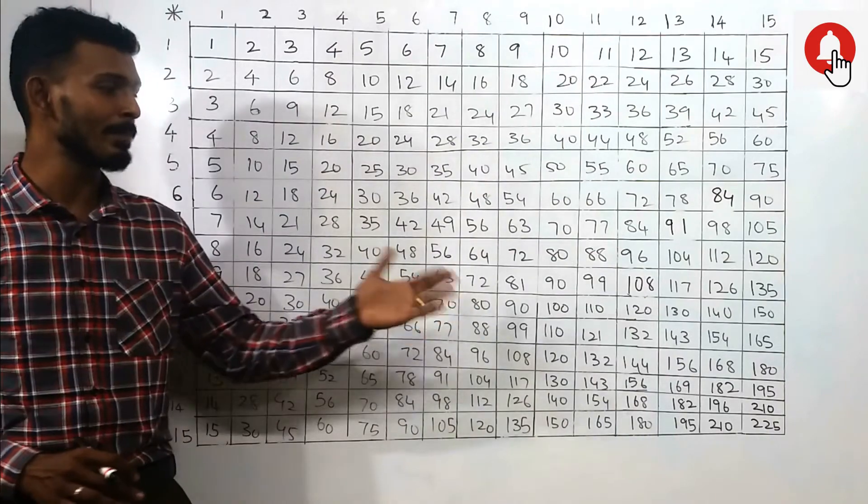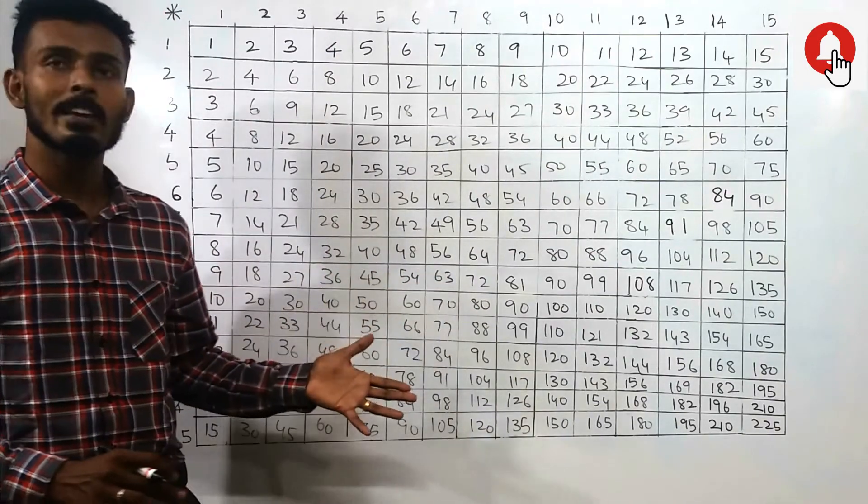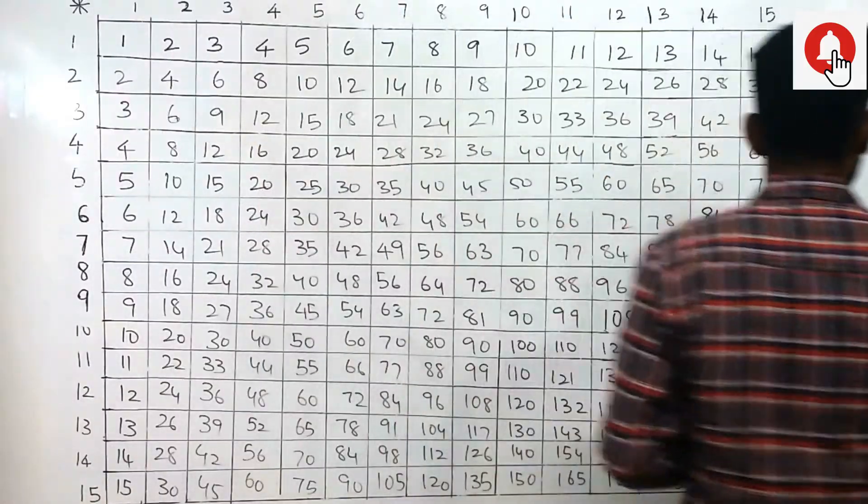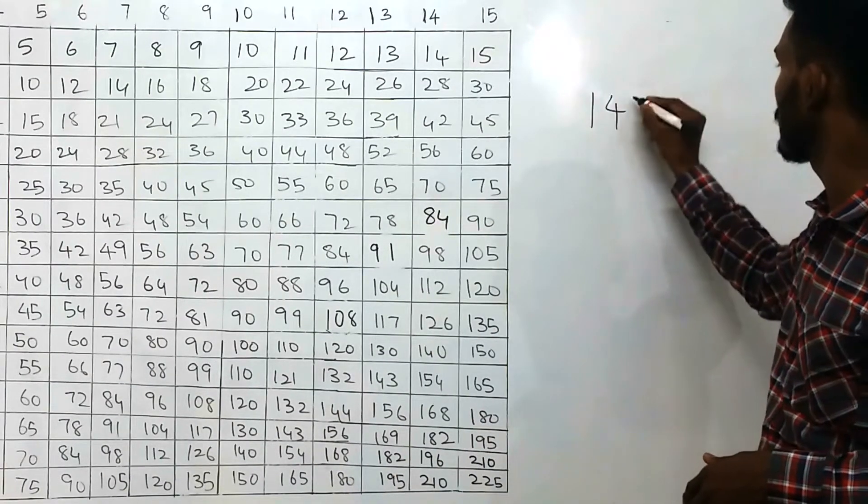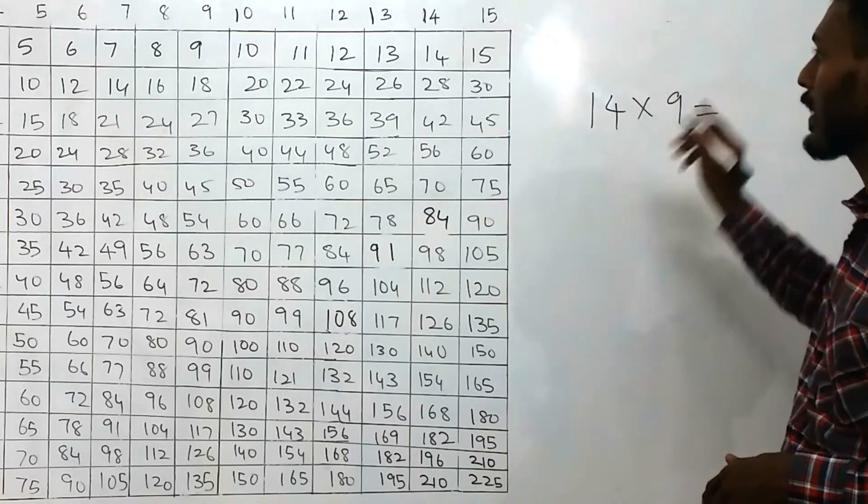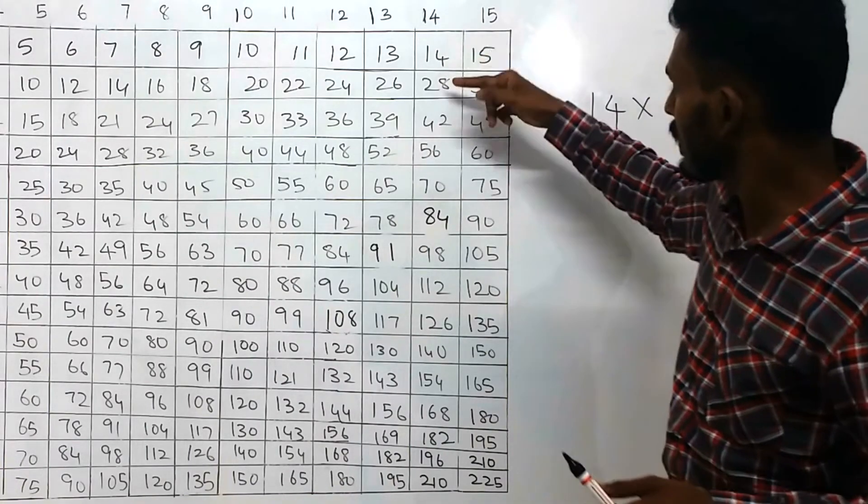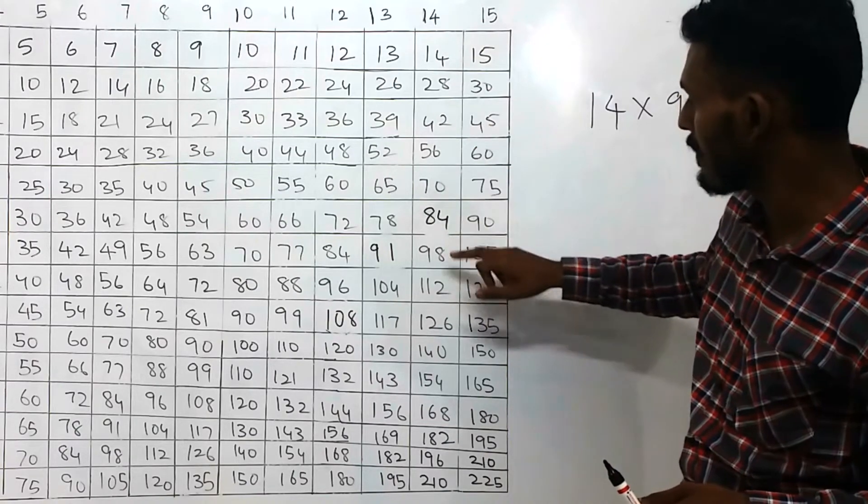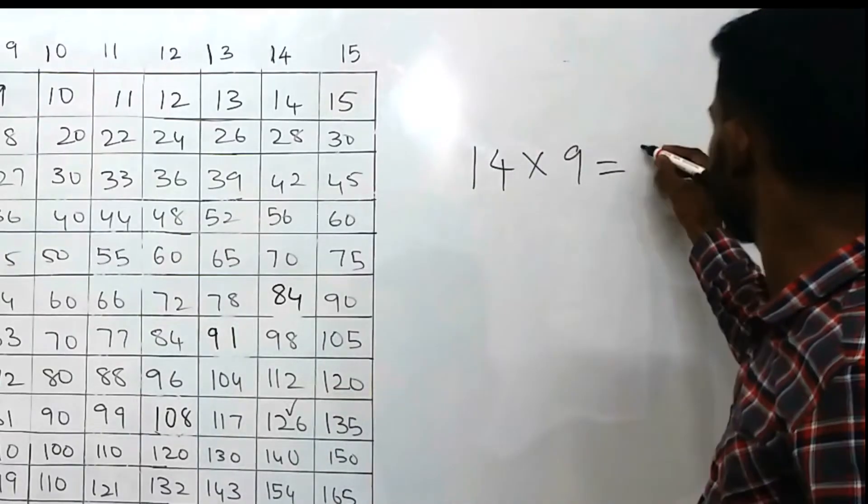Finally, the table is being made. From this table, we can calculate the multiplication table. For example, if you want to find what is 14 into 9, from 14 we have to count 9 spaces: 1, 2, 3, 4, 5, 6, 7, 8, and 9. That is 126.